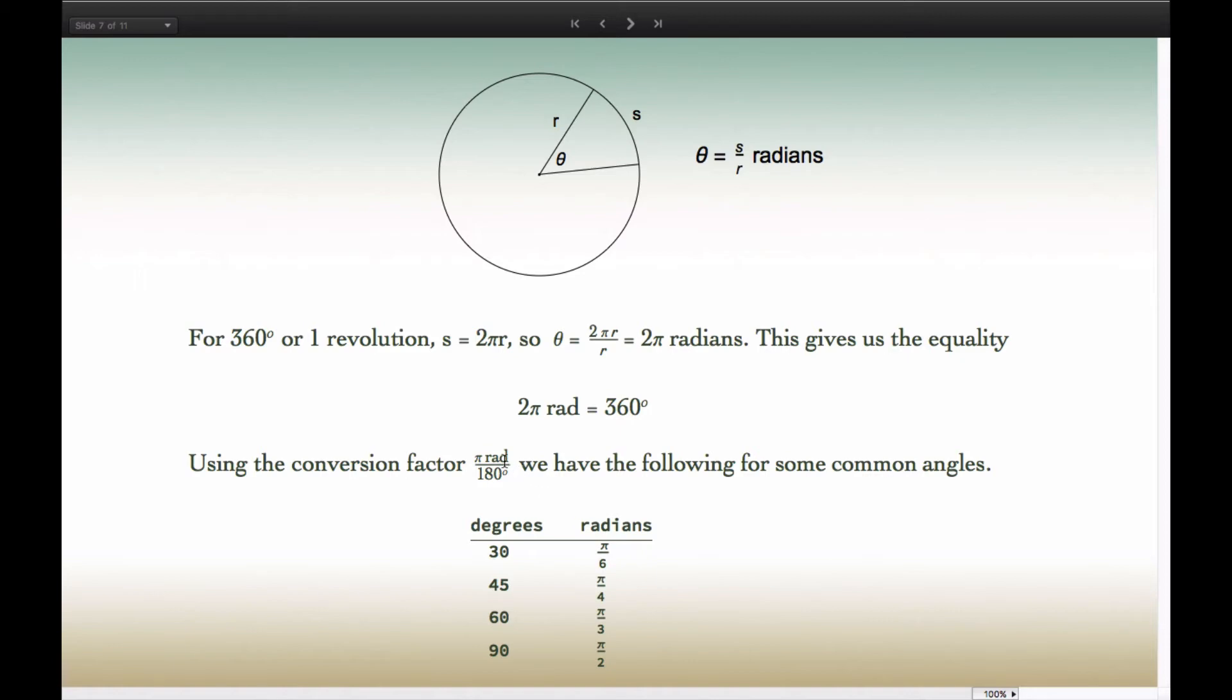Thus, we have this familiar conversion factor that we use π radians over 180 degrees to convert between radians and degrees. For example, these common angles here: 30 degrees is equivalent to π over 6 radians, 45 degrees is π over 4 radians, etc.